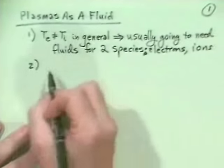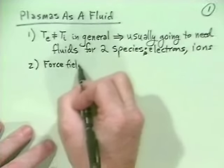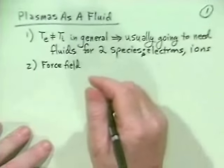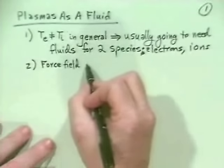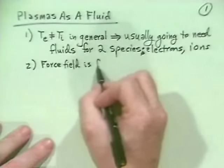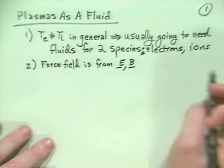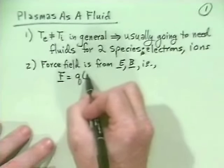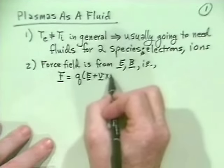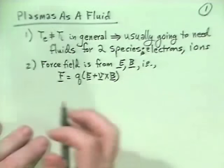The second comment is that the force field we want to consider, which will act upon both ions and electrons individually and on the fluid as a whole, is from the electric field and the magnetic field. Of course, it is then the Lorentz force: force equals QE plus V cross B. We're going to have that Lorentz force both on each individual particle and on all of the particles.